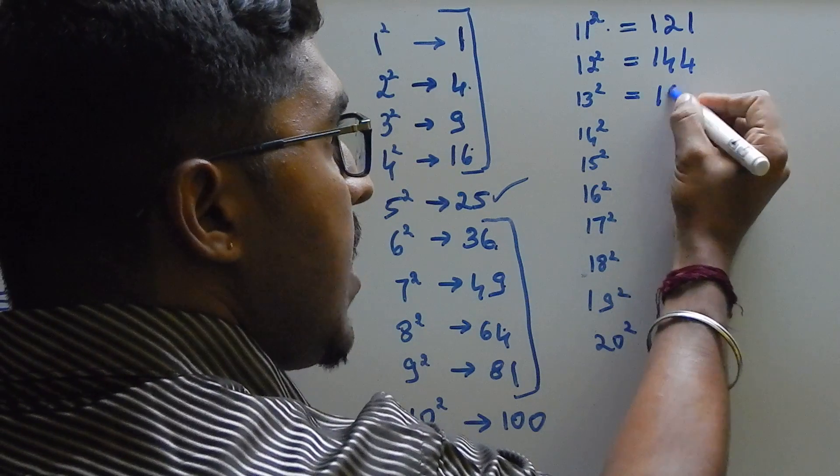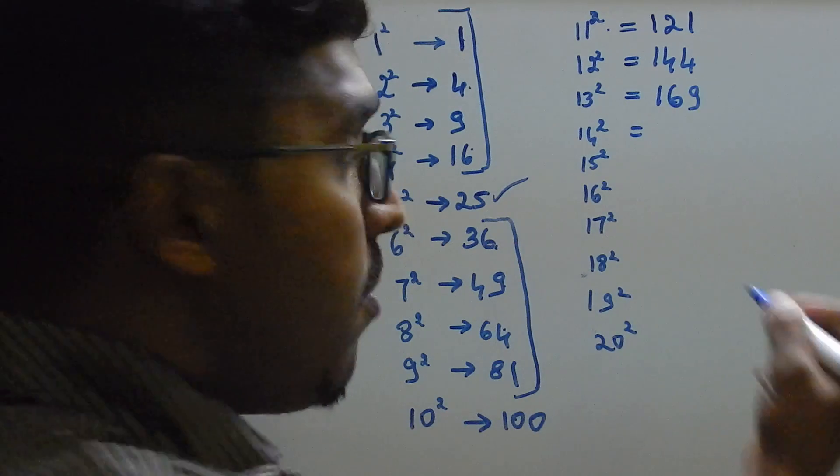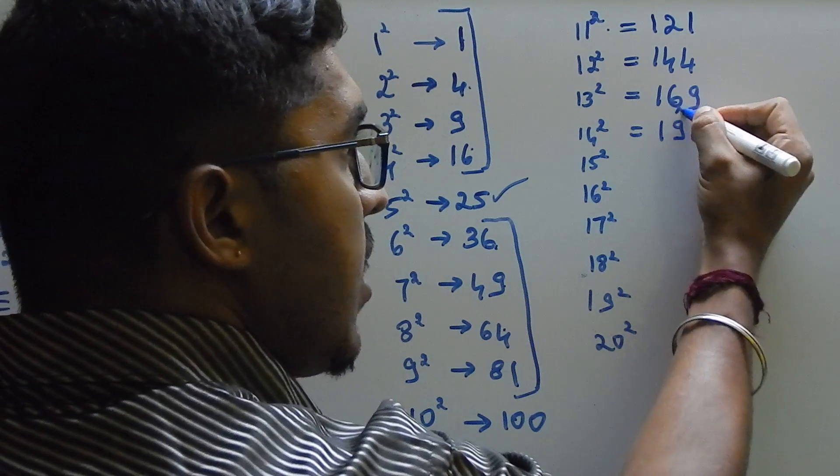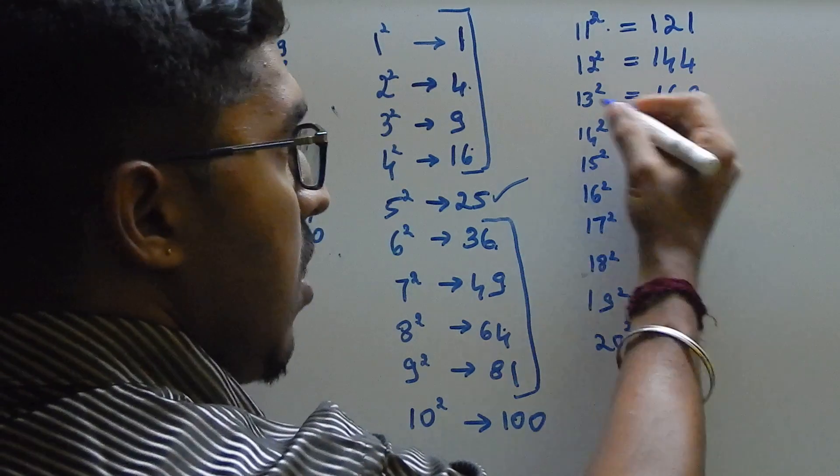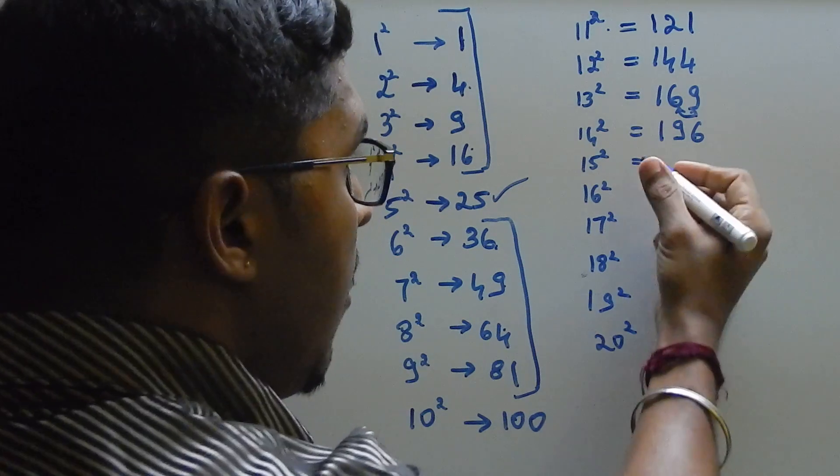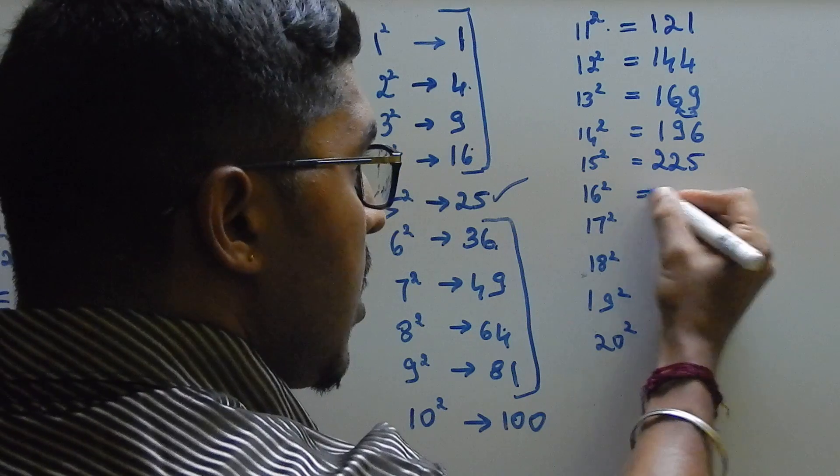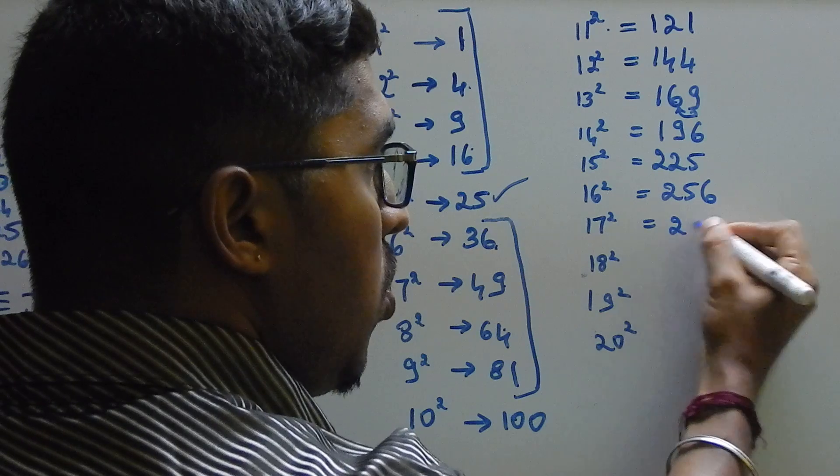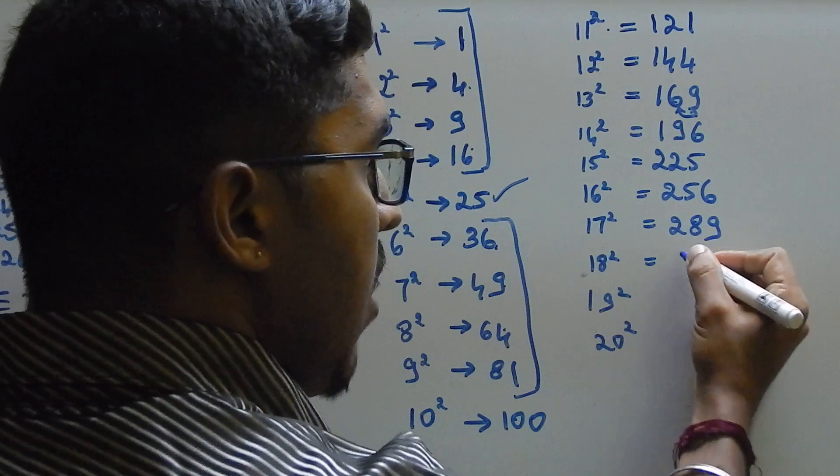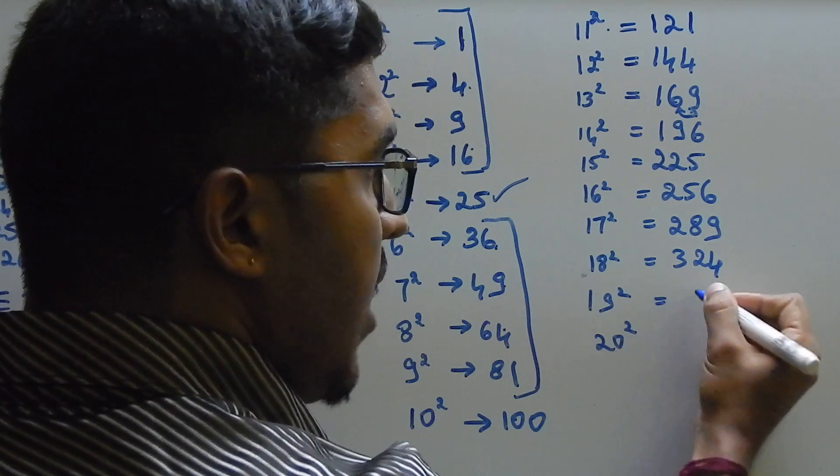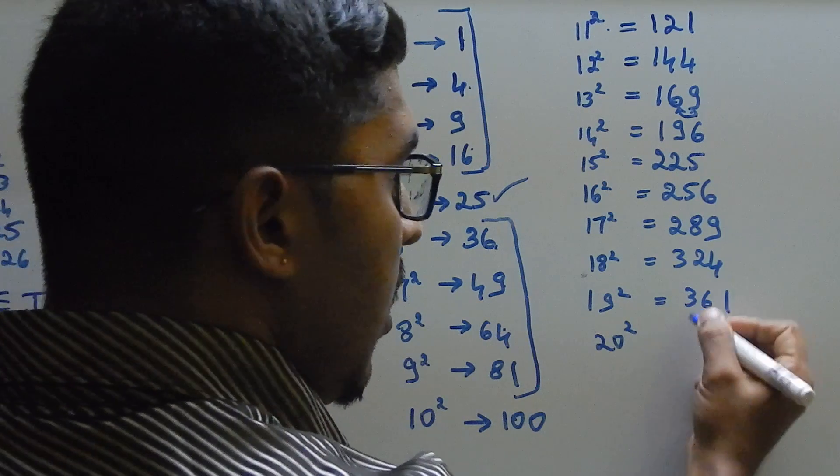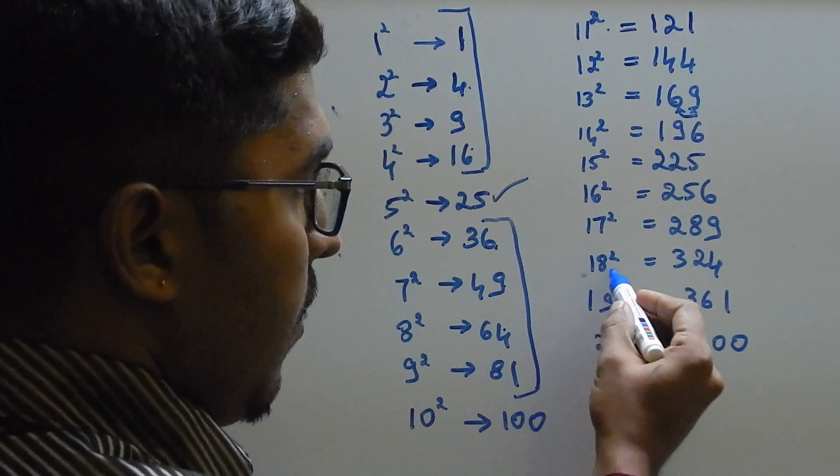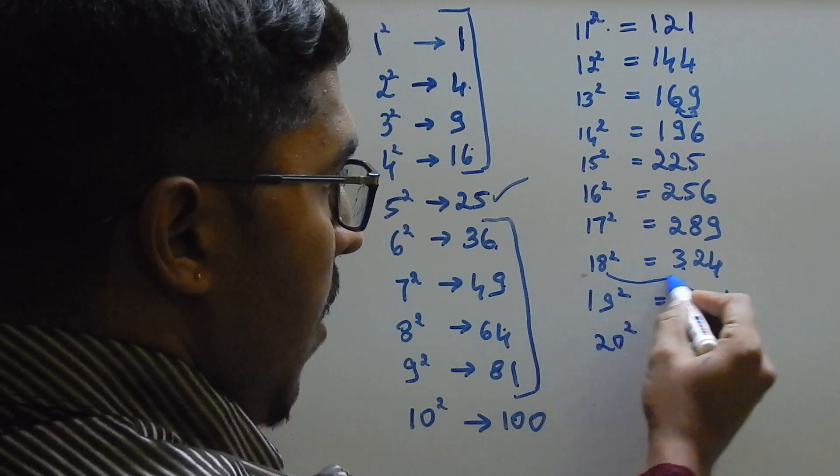13 square 169. Now 14 square will be 196. Here 6, 9, here 9, 6 - interchanging of the numbers of 13 square you will be 14 square. 15 square 225, 16 square will be 256, 17 square 289, 18 square 324, 19 square 361, 20 square 400. Here 8 threes are 24, you can remember like this.